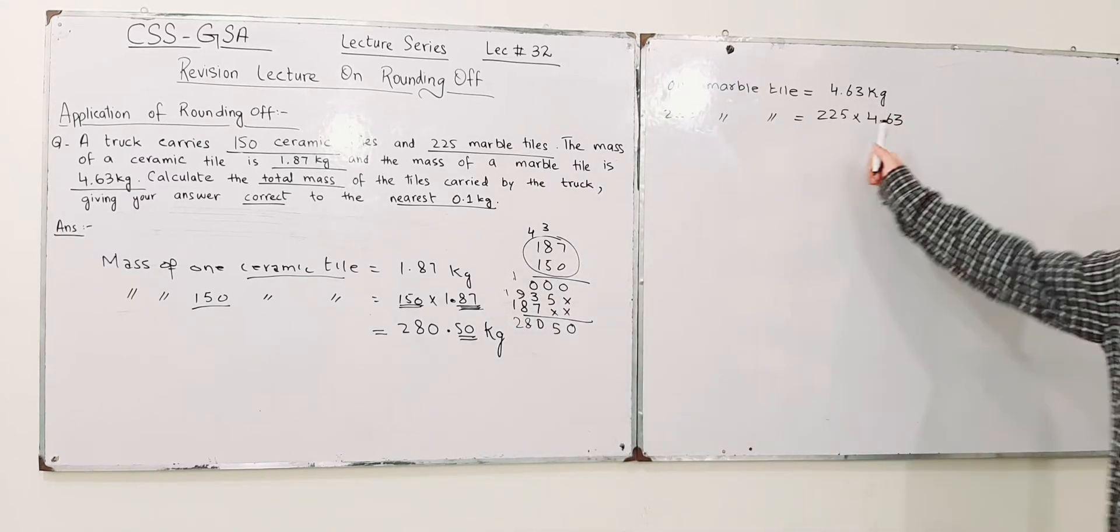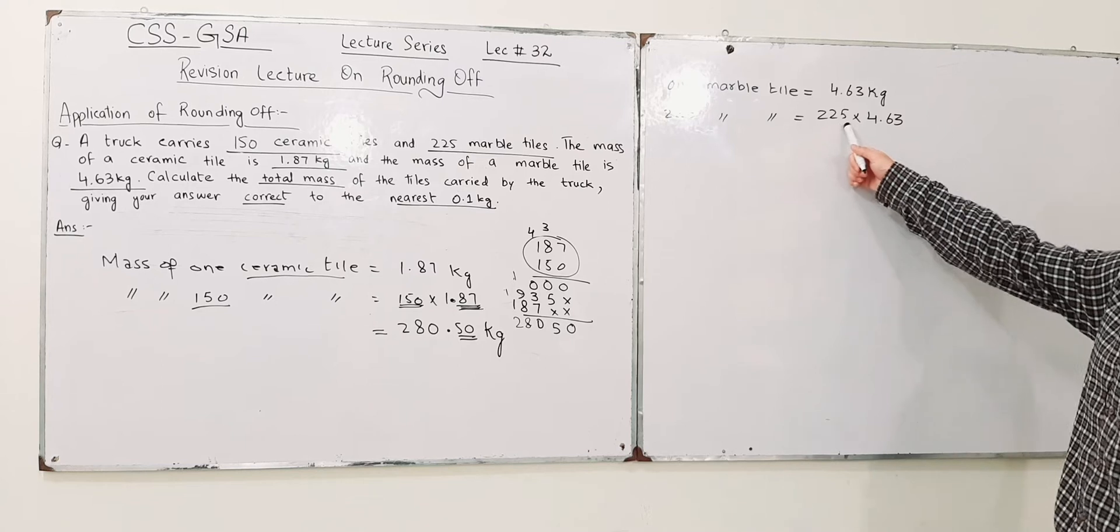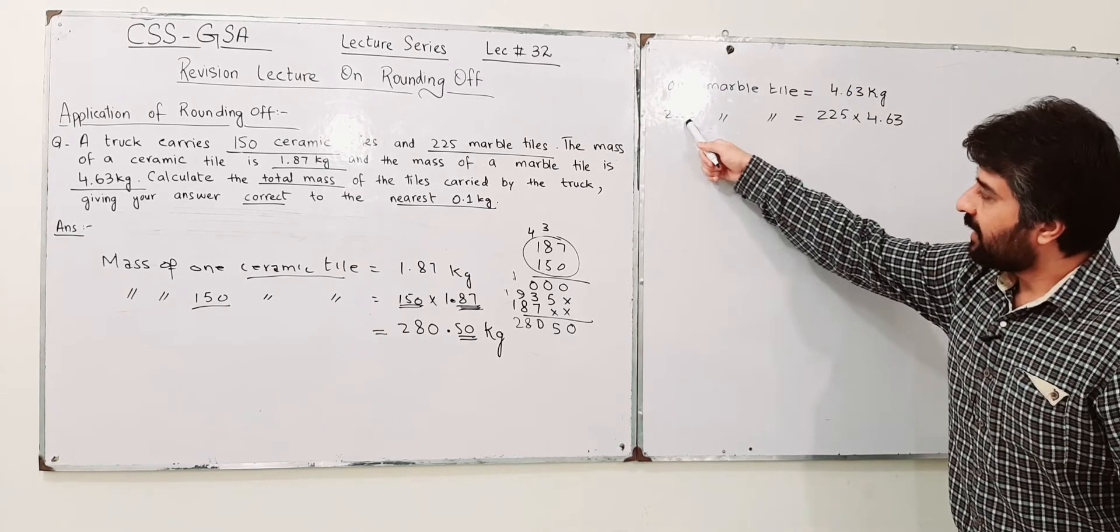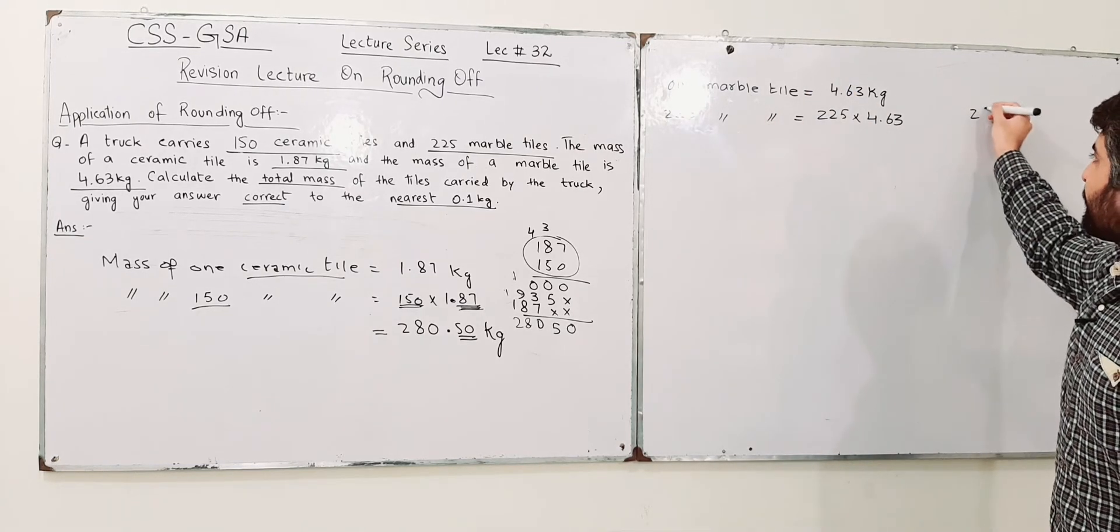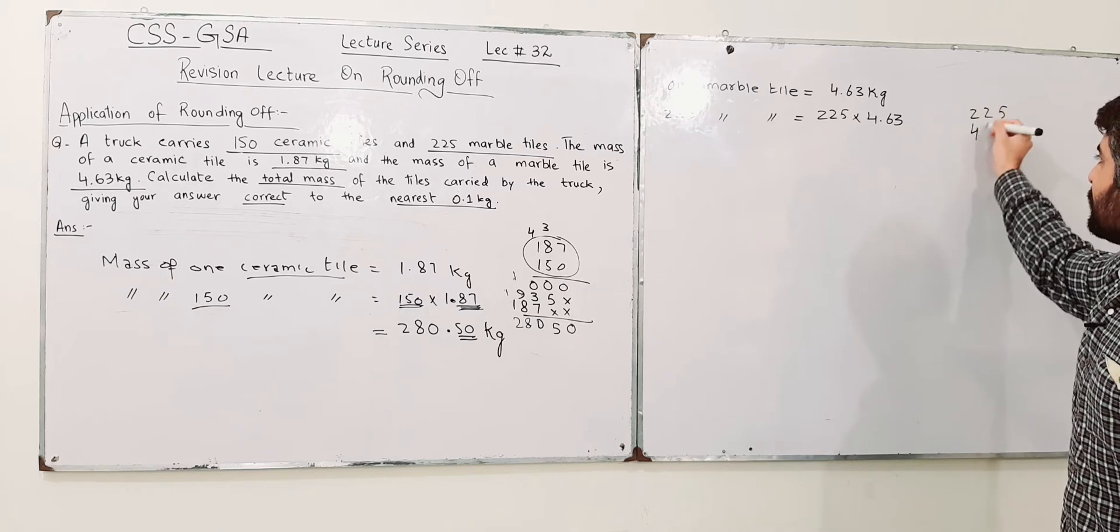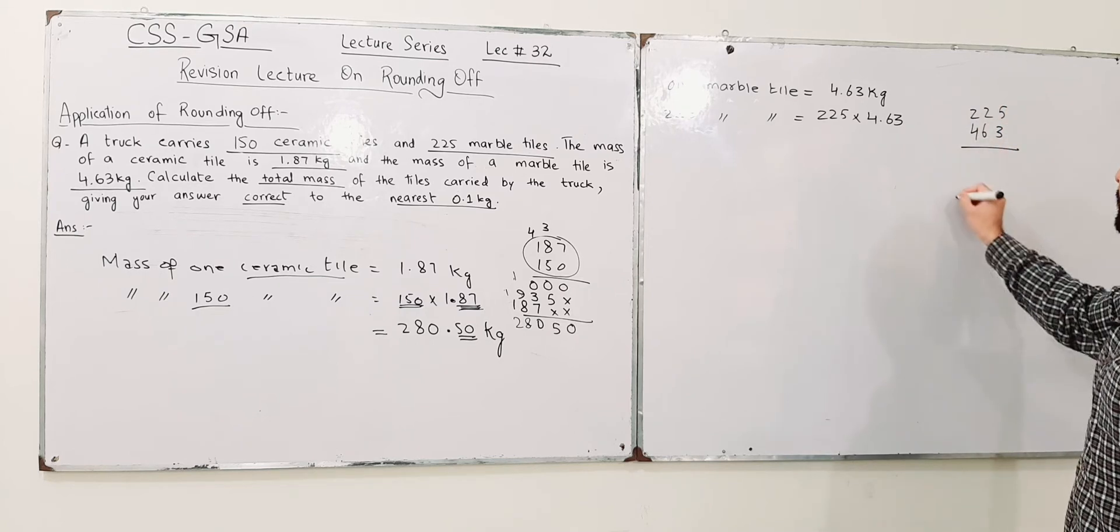4.63 is the mass of 1 tile, multiply by 225 to get the mass of 225 marble tiles. So it's 225 into 463, I will add the decimal after multiplication.